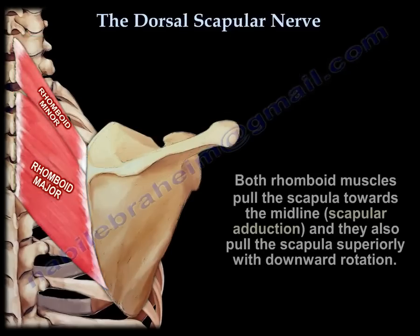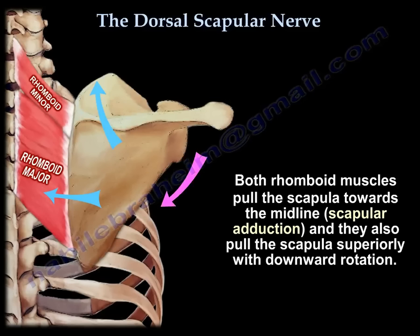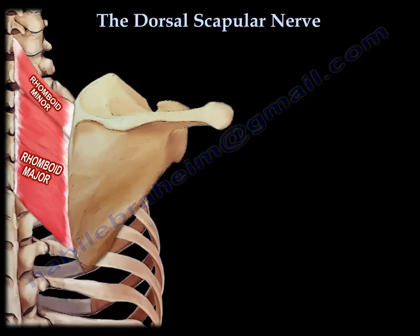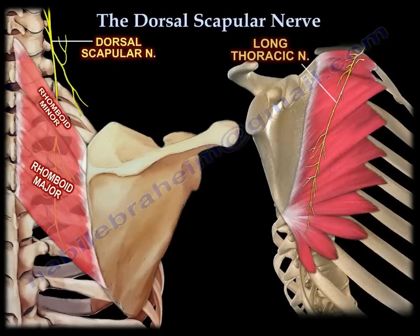The rhomboids pull the scapula towards the midline — that is scapular adduction — and also pull it superiorly with scapular downward rotation. This is opposite to the serratus anterior, which is supplied by the long thoracic nerve.